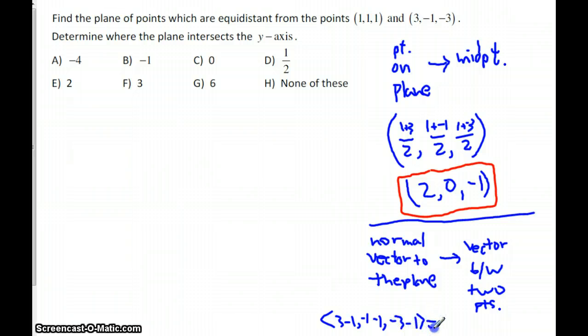So that gives the normal vector 2, negative 2, negative 4.